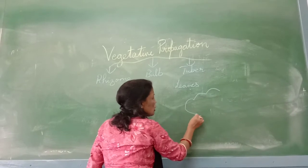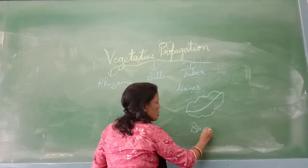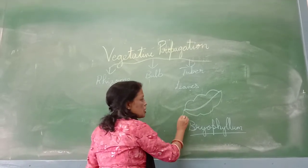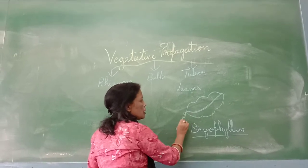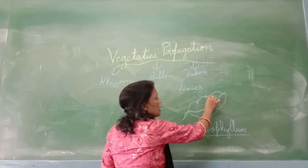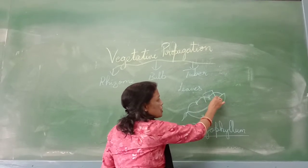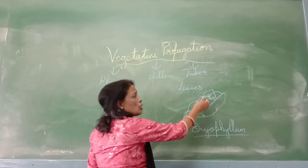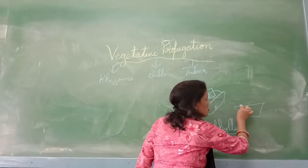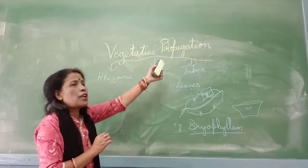Vegetative propagation can also take place with the help of leaves. There is a particular leaf which is referred to as Bryophyllum. Most new plants grow with the help of seeds, but in this plant, along the margin, tiny buds develop which give rise to leaves and adventitious roots. If you detach a part of the leaf having these tiny buds or young leaves with adventitious roots and grow it in a pot, a new plant develops. This is vegetative propagation through leaves.